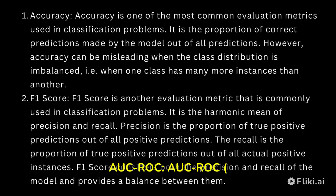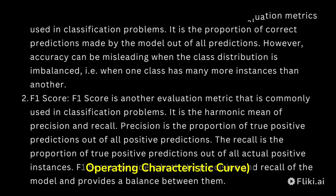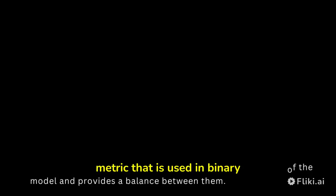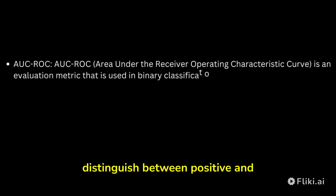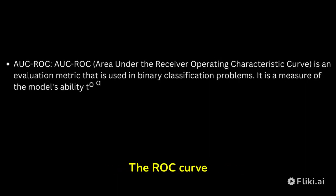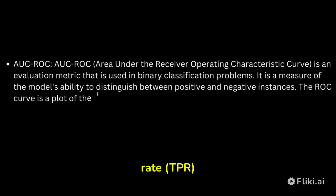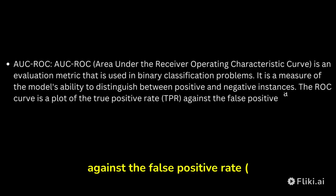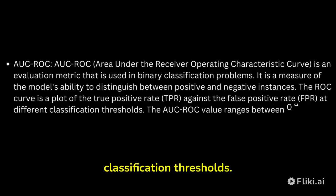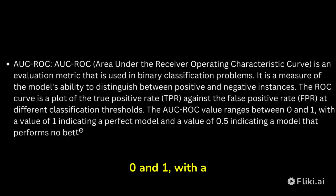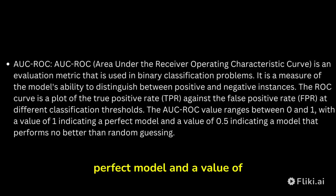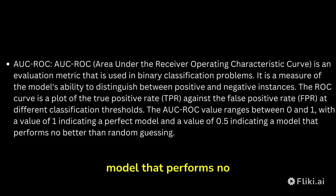AUC-ROC (Area Under the Receiver Operating Characteristic curve) is an evaluation metric used in binary classification problems. It is a measure of the model's ability to distinguish between positive and negative instances. The ROC curve is a plot of the true positive rate (TPR) against the false positive rate (FPR) at different classification thresholds. The AUC-ROC value ranges between 0 and 1, with a value of 1 indicating a perfect model and a value of 0.5 indicating a model that performs no better than random guessing.